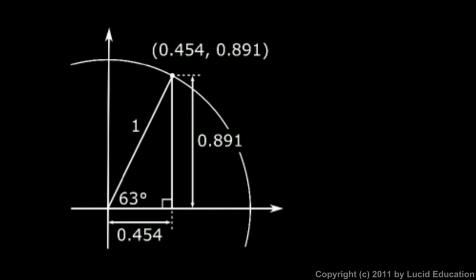All I want you to see on this diagram is that that x-coordinate is also the length of this side of the triangle. The hypotenuse is one, this side has a length of 0.454, and that's indicated in the diagram.